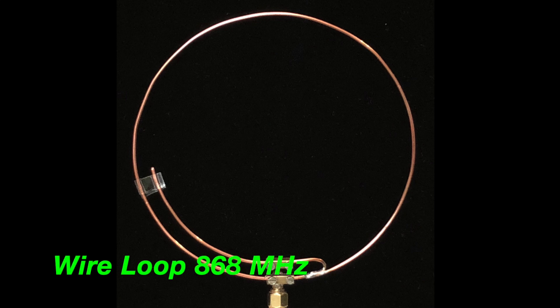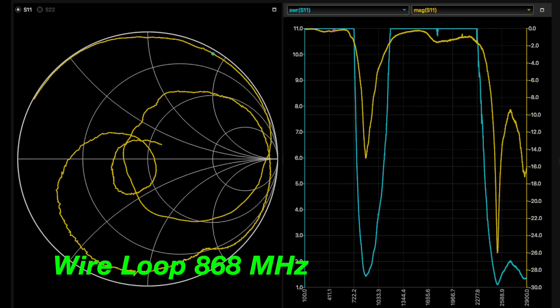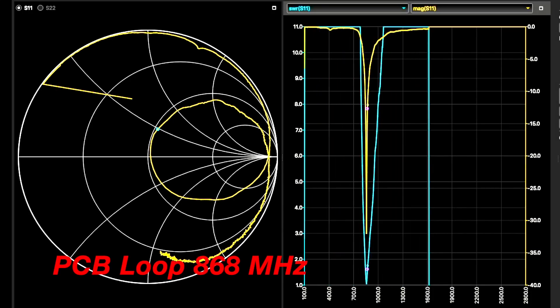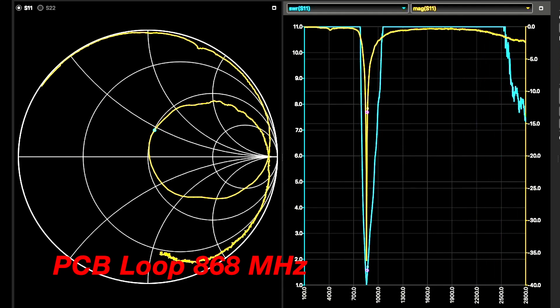Usually, lambda loops are resonating at multiples of the fundamental frequency too, as we have seen with wire loops. With this planar design, we are able to suppress higher resonances, which further improves the intermodulation resilience. The reason for this is actually very interesting. We explain it in a separate video.